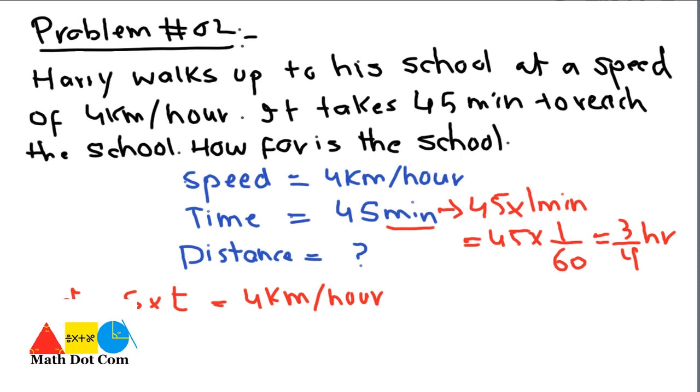So we have converted the time into hours. It means while calculating speed, distance, or time, all the units of all quantities must be uniform. If one quantity is in hours, then the other must be in hours. If one quantity is in minutes, then the other must be in minutes.